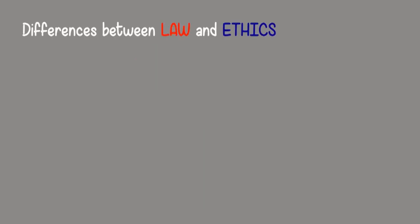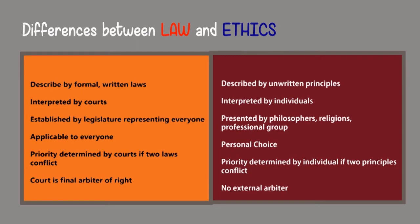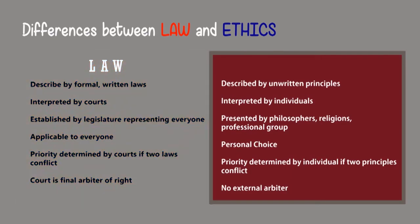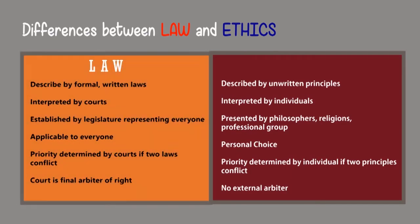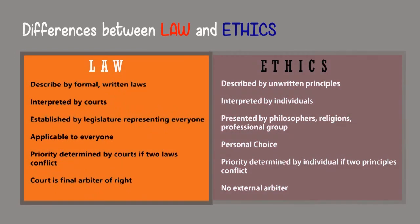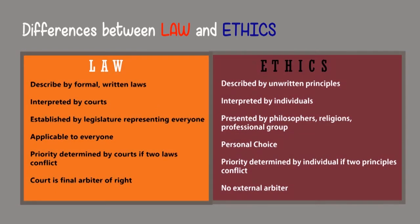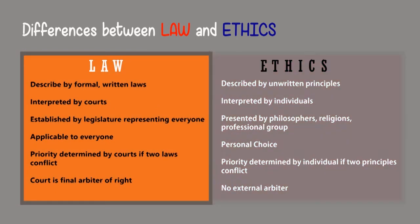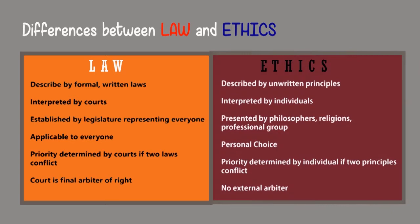Differences between law and ethics: Law is described by formal, written laws and is interpreted by courts — applicable to everyone. Ethics, on the other hand, is described by unwritten principles, interpreted by individuals, and is a matter of personal choice.